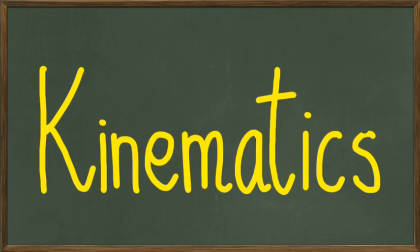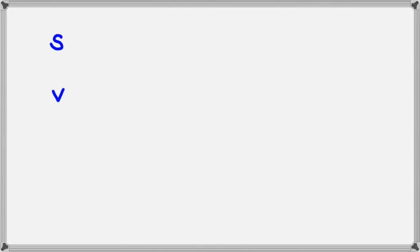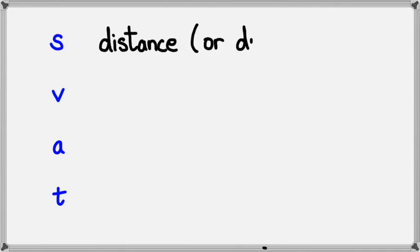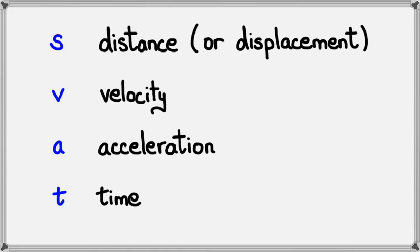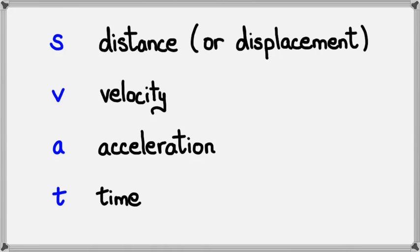Hey guys, in this session we're going to be covering kinematics. Brace yourself, there's a lot to cover. The first thing you need to know with kinematics are these four letters: S, V, A, and T. S is distance or displacement, V is velocity (also known as speed), A is acceleration, and T is time. These are the four things you'll predominantly be dealing with in kinematics.